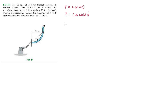The next thing will be our r̈. This is a little more tricky, but not really. This will be −0.6 sine θ · θ̇ · θ̇, in other words −0.6 sine θ · θ̇².